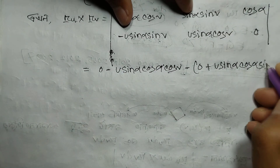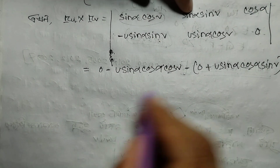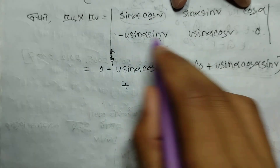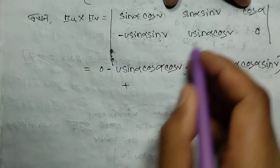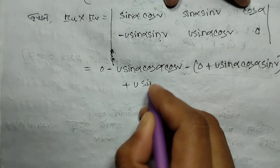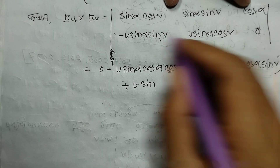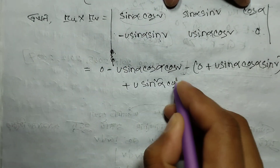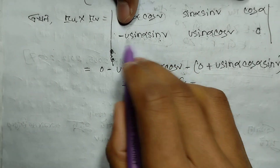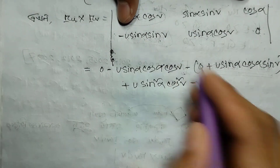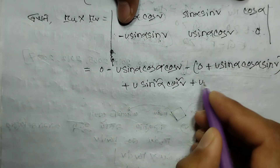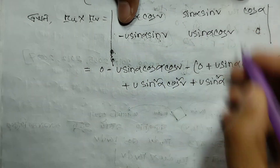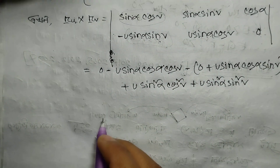Taking the cross product r_u × r_v: we get plus cosα terms, then minus eta terms. Expanding: minus eta gives minus u sinα sinv terms. We have sinα times sin squared alpha. Then cosv times cosv gives cos squared v. Continuing: minus minus gives plus, and sinα times sinα gives sin squared alpha, sinv times sinv gives sin squared v.